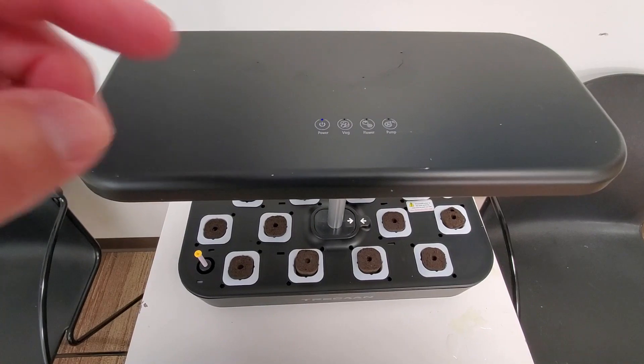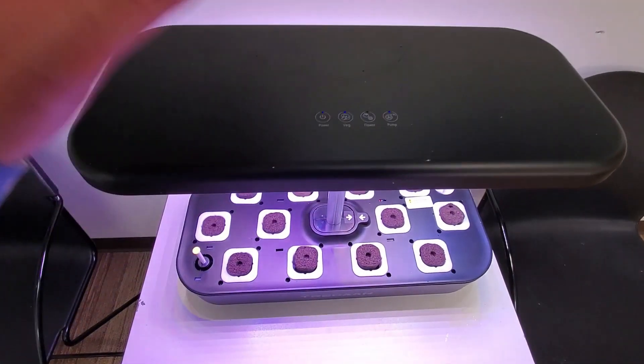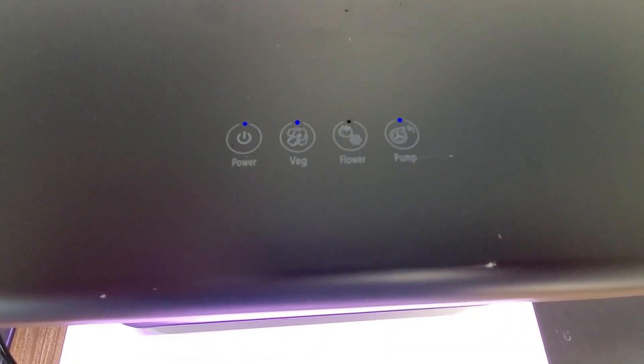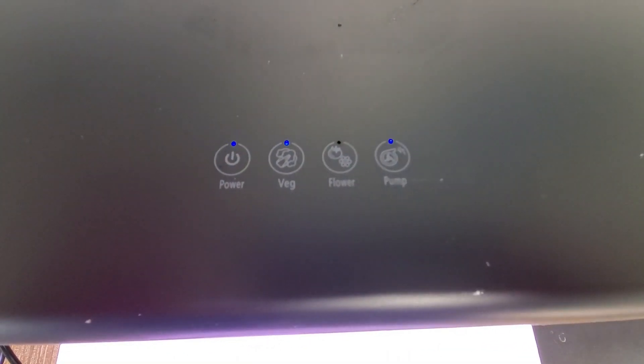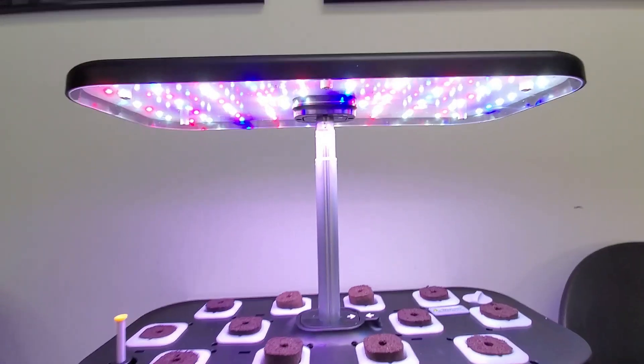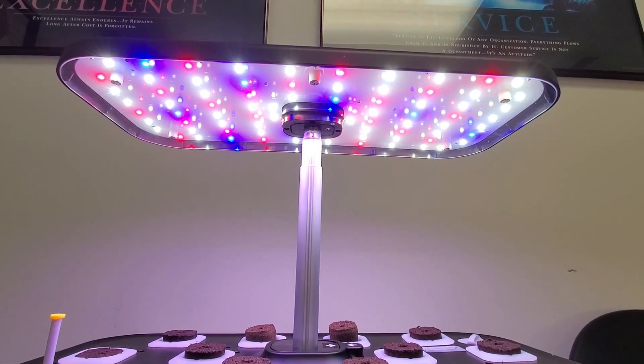So with the unit plugged in, I'm going to push the power button once, and immediately you're going to see that it goes into vegetative lighting with the pump cycle. This is what it looks like on veg cycle, and there's a look underneath at the LED lights.